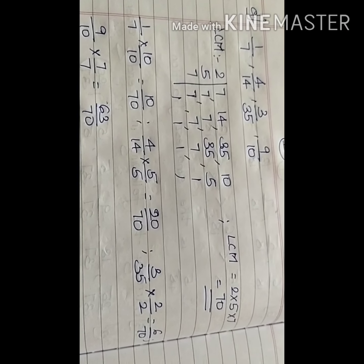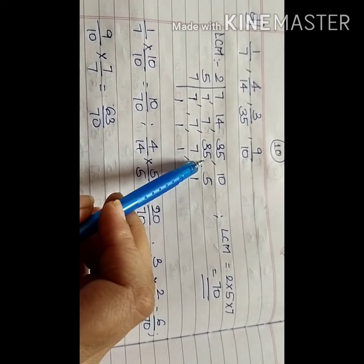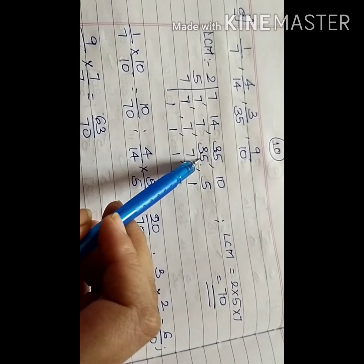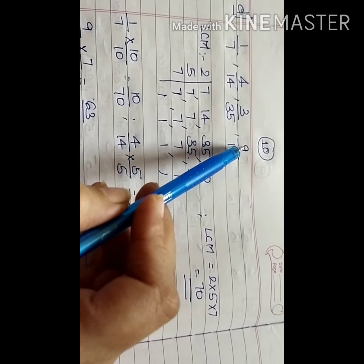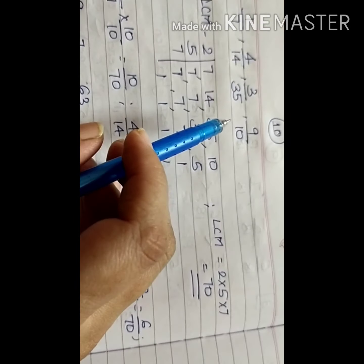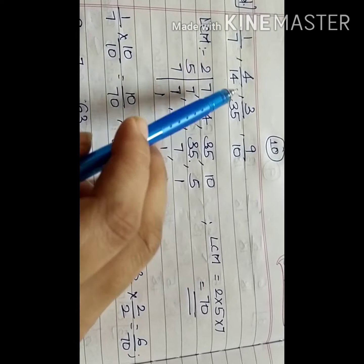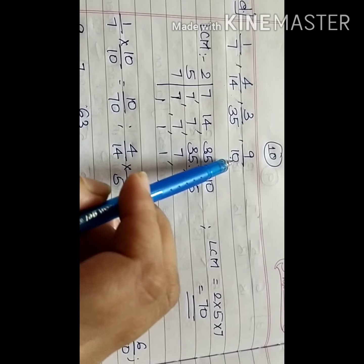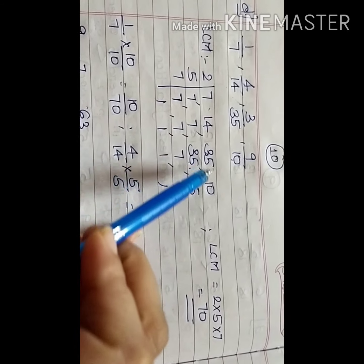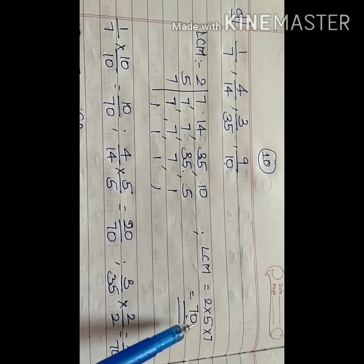Now let us look at arranging fractions in ascending and descending order. From practice question 3: arrange 1 upon 7, 4 upon 14, 3 upon 35, and 9 upon 10 in ascending order. Since these are all unlike fractions, we first make them like fractions by making the denominators the same using the LCM. Writing the denominators: 7, 14, 35, 10 — the LCM is 70.